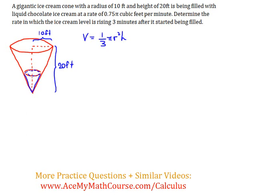Related rates problem, gigantic ice cream cone, take number four, hopefully the last take. Okay, so I will assume you have read the problem. So we're pouring ice cream, liquid ice cream, into a gigantic ice cream cone at a rate of 0.75 pi cubic feet per minute. What does that mean?